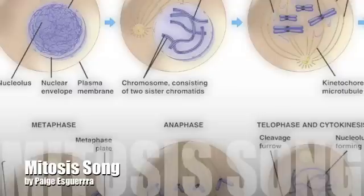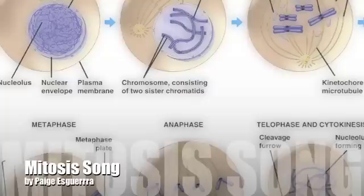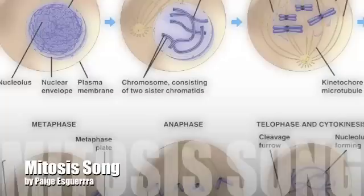Cell division — the surface area is too small and the oxygen and food can't get to it all. Right now let's get back to what I was saying before: P-MATI is an acronym, so it's easy walking through a storm. Prophase, metaphase, anaphase, telophase, interphase — it's as simple as that.